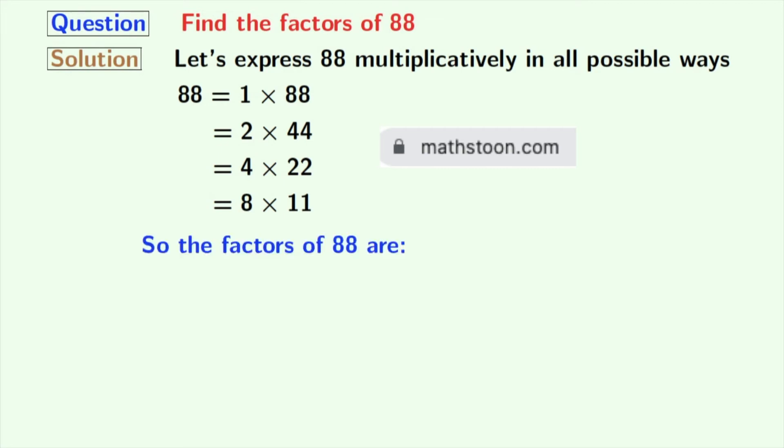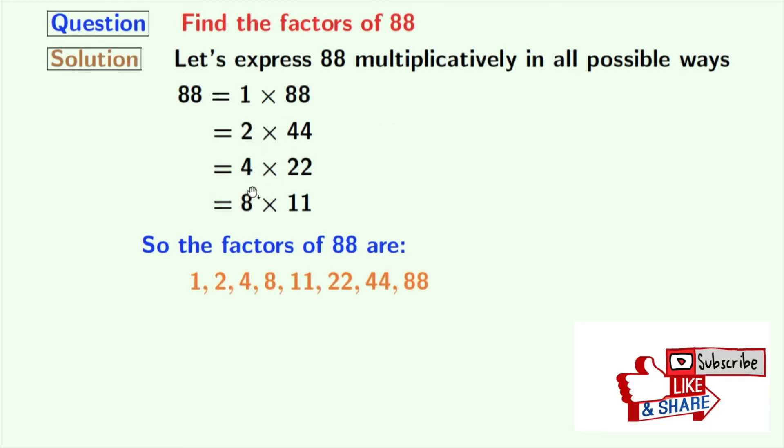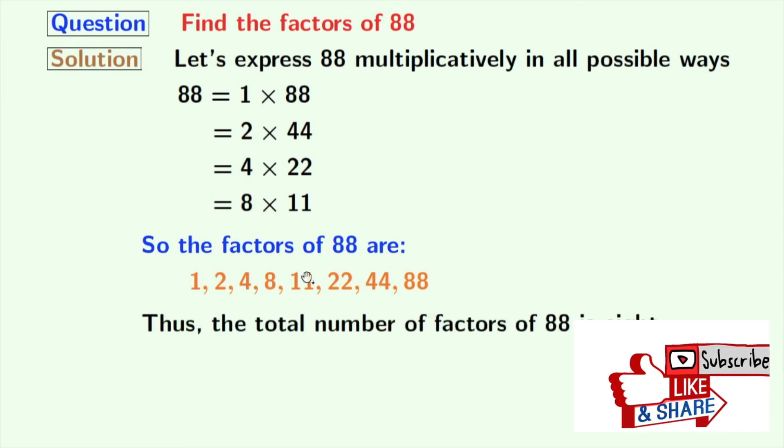Now, we have all the factors of 88 here which are 1, 2, 4, 8, 11, 22, 44 and 88. So the total number of factors of 88 is 8.